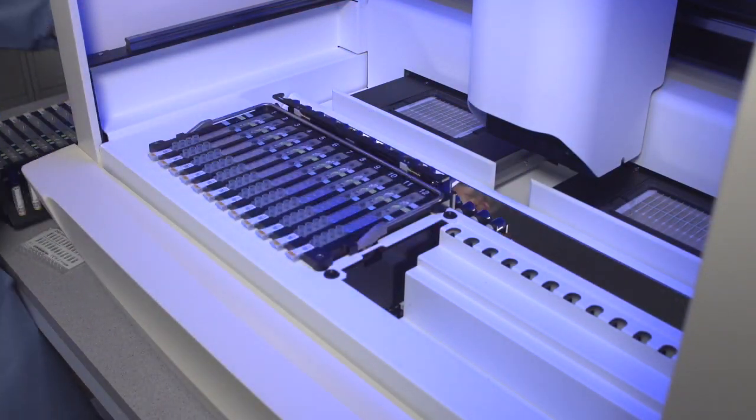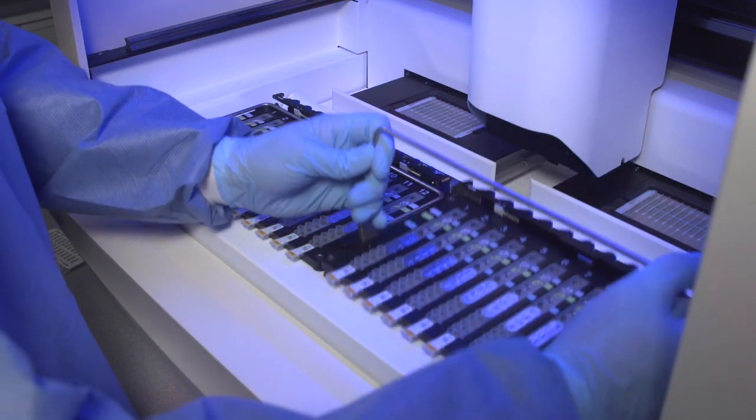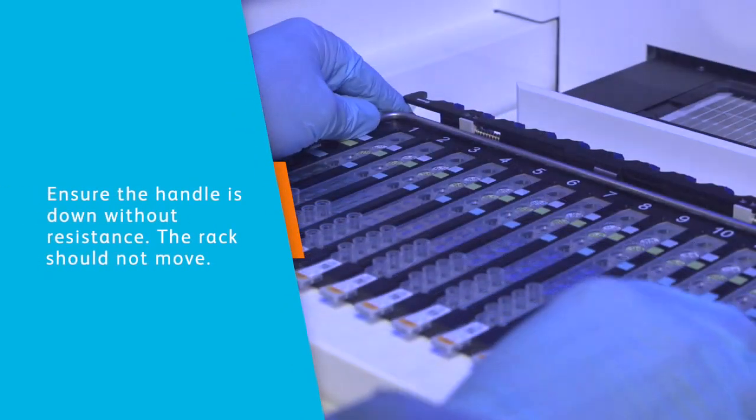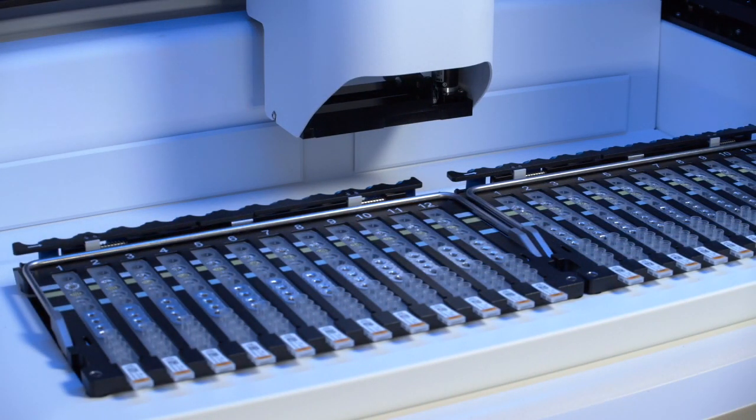Place the sample rack or racks into the system. When the rack is in position, lower the handle to lock it in place. You'll know your sample rack is seated properly if you can put your handle down without resistance and the rack doesn't wobble. Your tubes will face opposite you. Repeat the procedure for the second sample rack.